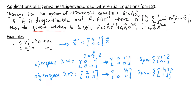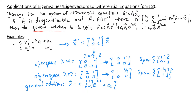Once we know the eigenvalues and eigenvectors, we're ready to write our general solution. The general solution is x equals c1 times the vector (1, 0) e to the 4t, plus c2 times the vector (negative 1/2, 1) e to the 2t.